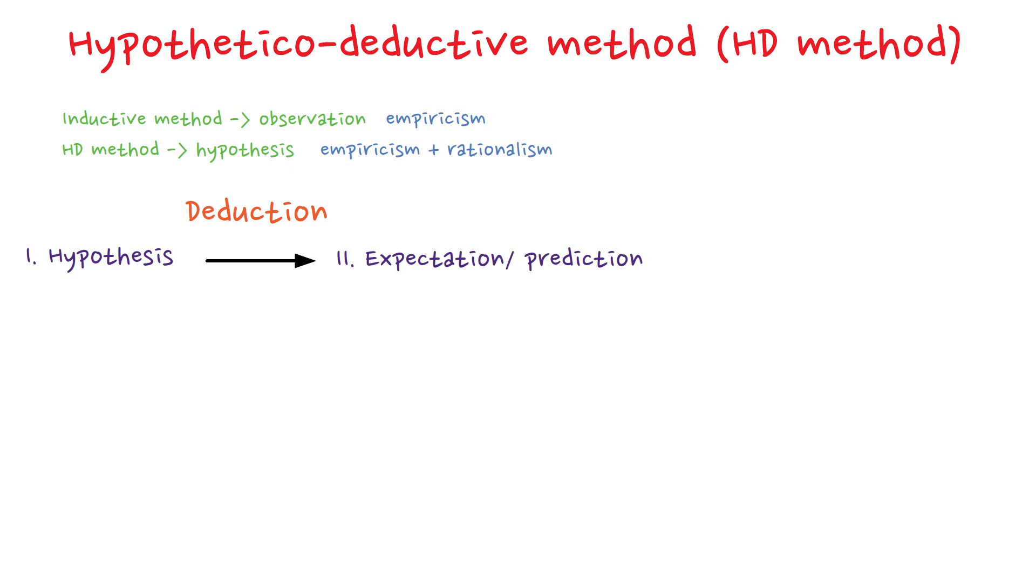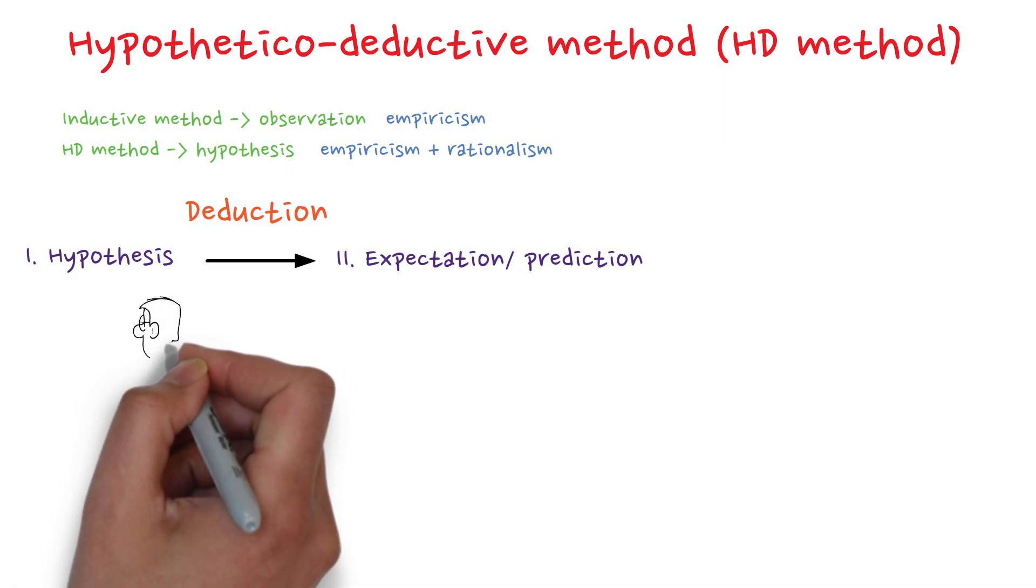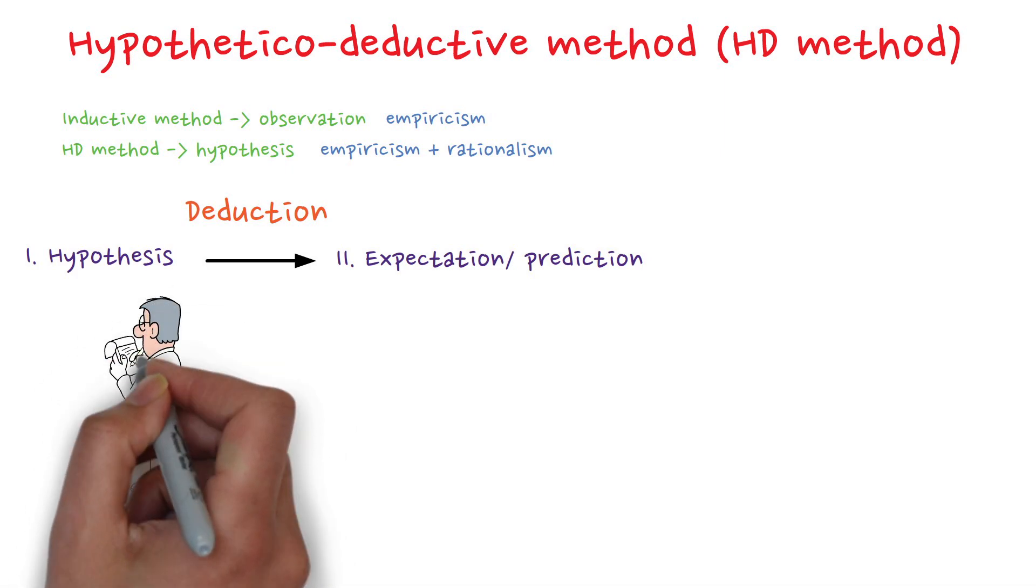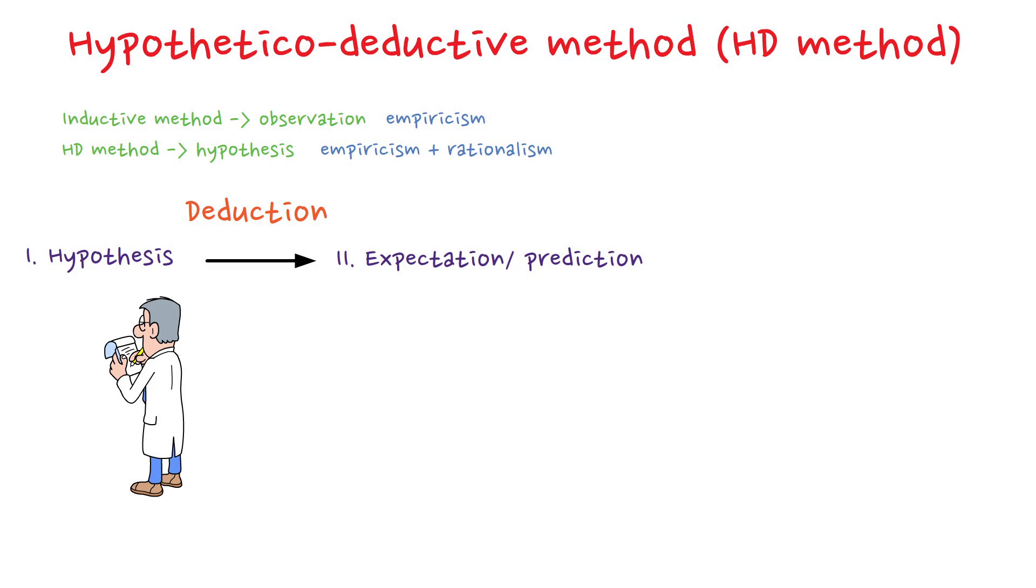One physician, Ignatz Semmelweis, noticed that mortality rates were significantly higher in one maternity ward compared to another. He hypothesized that doctors themselves were carrying particles from autopsies to the delivery room, unknowingly infecting the mothers. At the time, germs as we understand them today were not yet a known concept.